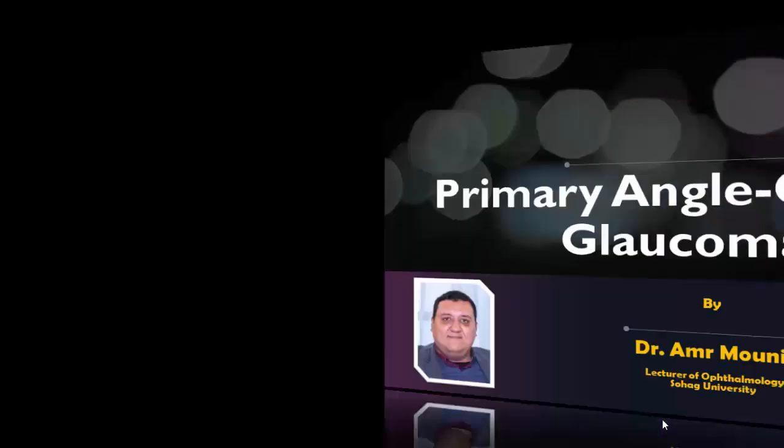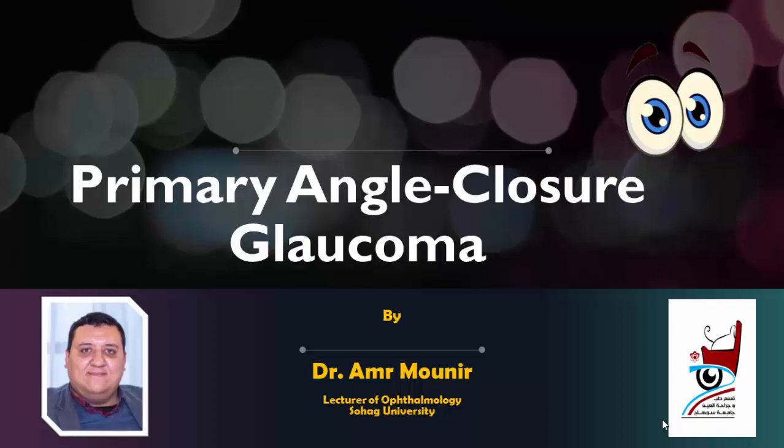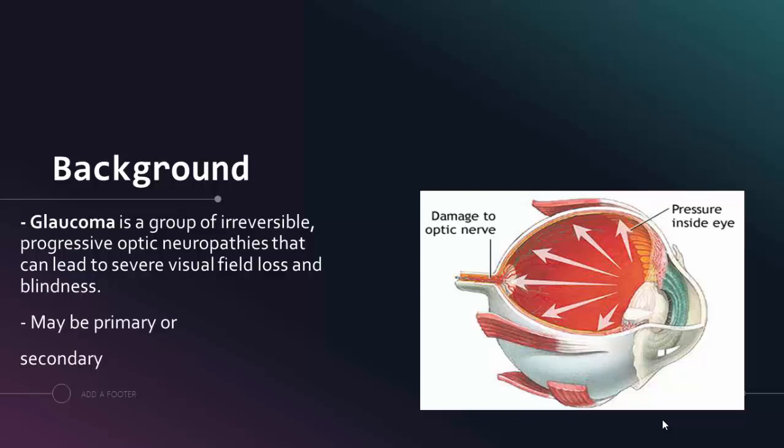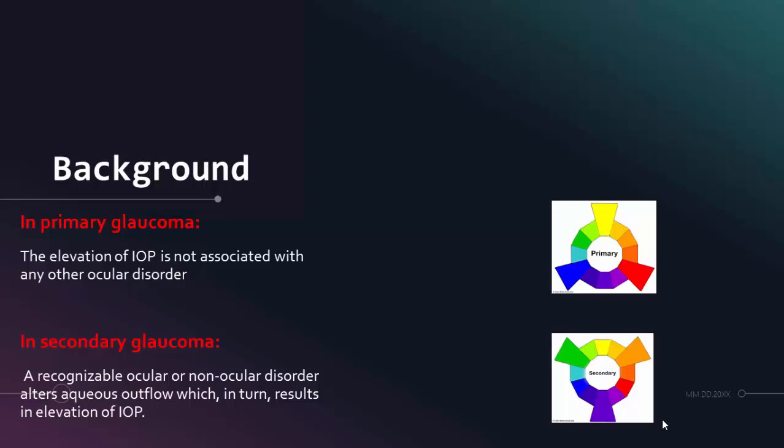Hi, my dear friends. Today we will discuss in this video presentation primary angle closure glaucoma. Glaucoma is a group of irreversible progressive optic neuropathies that can lead to severe visual field loss and blindness. It may be primary or secondary. In primary glaucoma, the elevation of the intraocular pressure is not associated with any other ocular disorder.